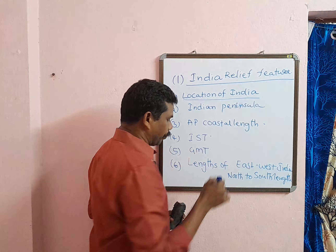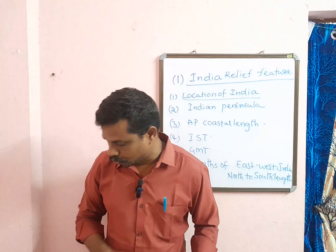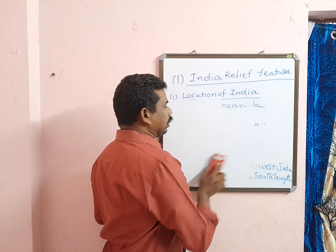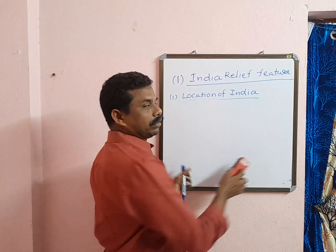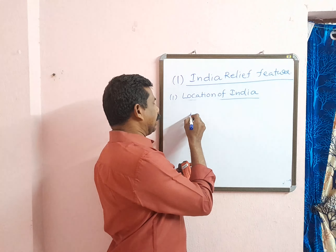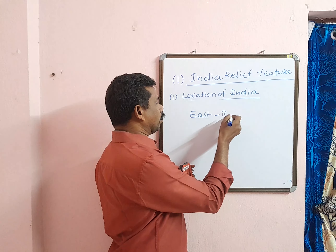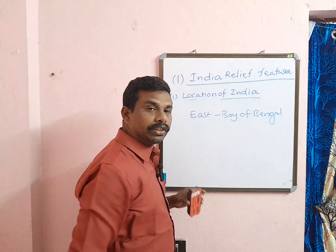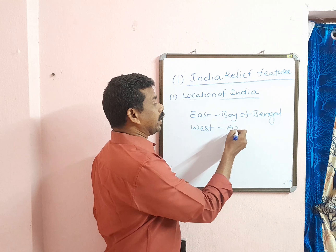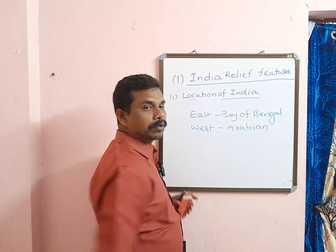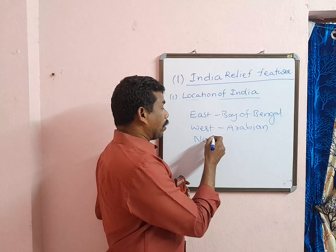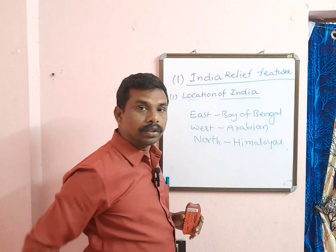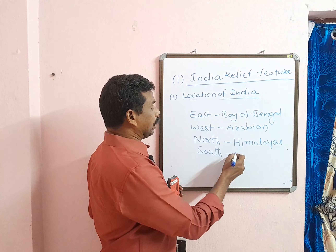First one: Location of India. Before we discuss the location, we have to know the boundaries of India. East is Bay of Bengal, West is Arabian Sea, North is the Himalayas, and South is the Indian Ocean.